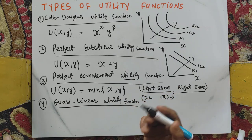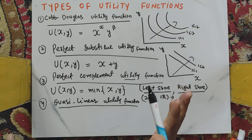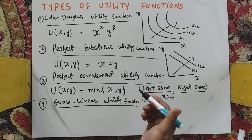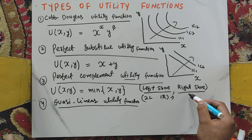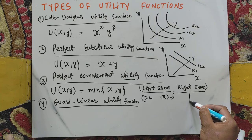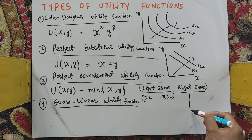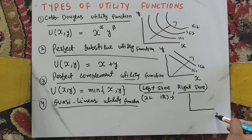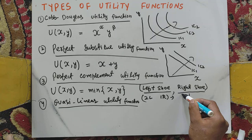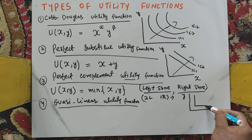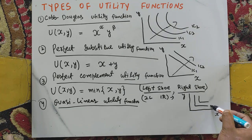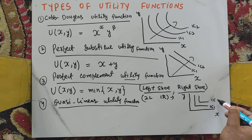For the perfect complement utility function, the graph features right-angled indifference curves, reflecting the fixed-proportion nature of consumption.